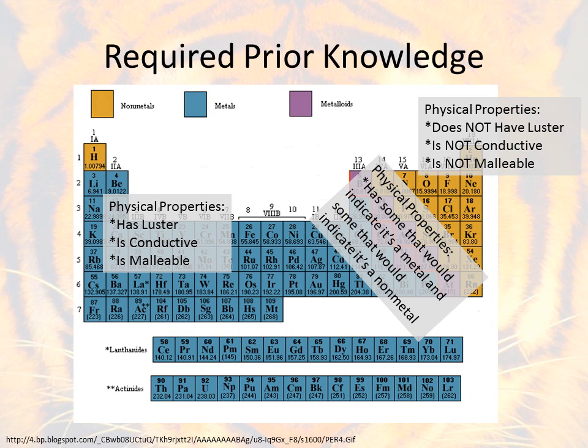Then you had the metalloids that kind of had a little bit of both. So for the physical properties, when you look at it, you'll see some properties that were a metal, and you'll see other properties that were a non-metal. And that's your indicator that you're looking at a metalloid.